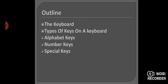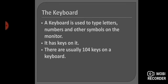Let's start. What is a keyboard? A keyboard is used to type letters, numbers and other symbols on the monitor. Keyboard के help से हम monitor पे letters, symbols और numbers type कर सकते हैं. It has keys on it. There are usually 104 keys on a keyboard, and that keyboard is called a standard keyboard.